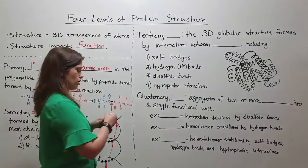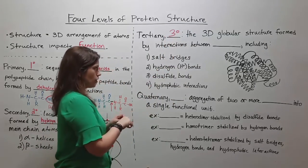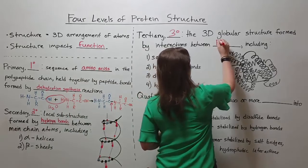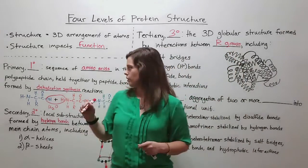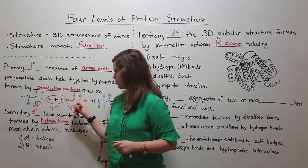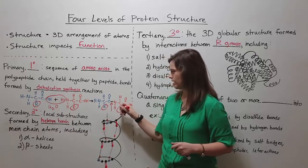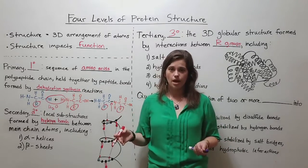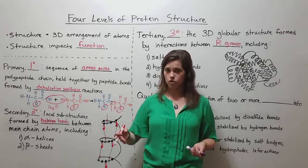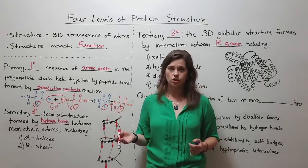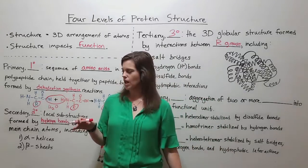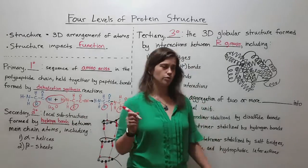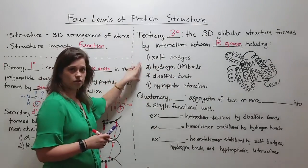Now let's talk about tertiary structure, which we can abbreviate as 3°. It refers to the 3D globular structure formed by interactions between those R groups. Remember, R groups — which I'll circle right here — are these components that are attached to the alpha carbon in each amino acid. These R groups have various properties: they can be hydrophilic, hydrophobic, they can have a sulfur group capable of covalently bonding to another R group's sulfur, they can be charged or uncharged. Where secondary structure involves hydrogen bonds between main chain atoms, tertiary structure refers to different kinds of interactions between those R groups.